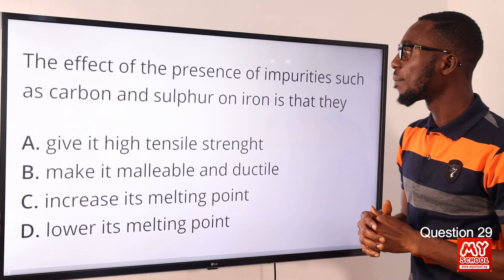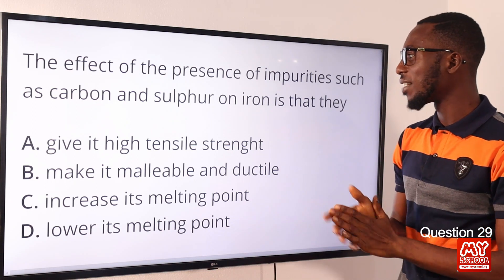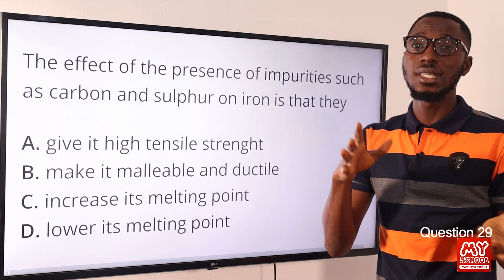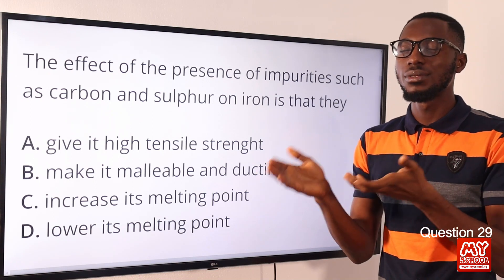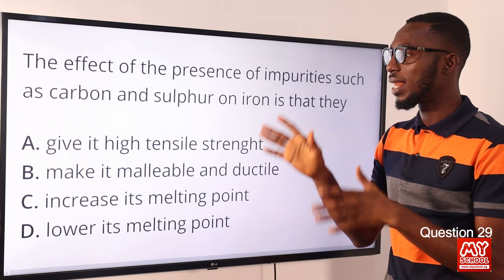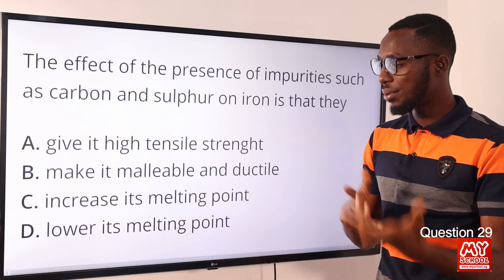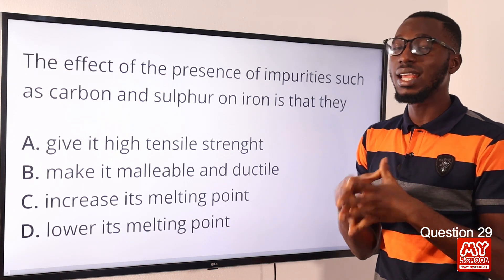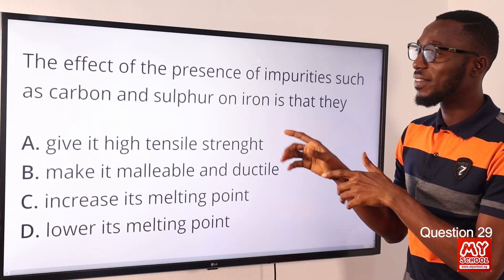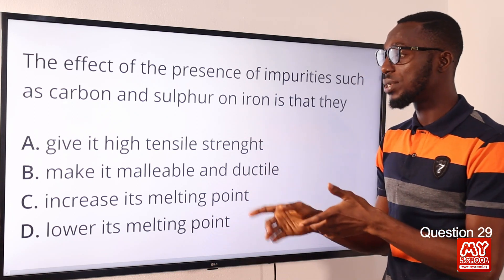Question 29. The effect of the presence of impurities such as carbon, sulfur, silicon, phosphorus, and manganese on iron is that they lower the melting point — from something around 1530 degrees to about 1200 degrees. We are talking about pig iron; it has less industrial use. We have pig iron, cast iron, and wrought iron. Iron is the second most abundant metal after aluminium in the Earth's crust. The effect of impurities such as carbon and sulfur on iron is that they lower its melting point. Option D is the correct option.